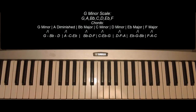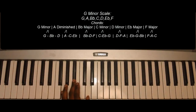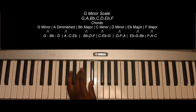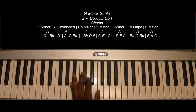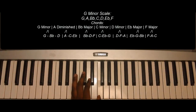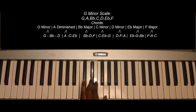Now the chords are as follows. Gm: G, Bb, D. A diminished: A, C, Eb. Bb major: Bb, D, F. Cm: C, Eb, G.